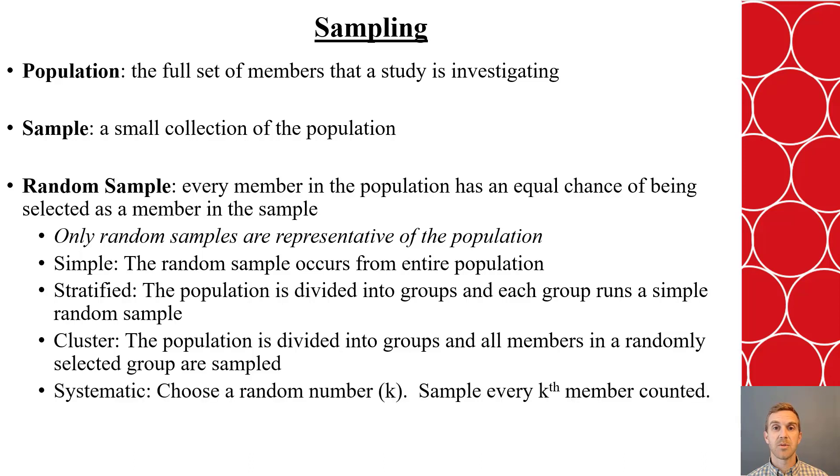And lastly, we have the systematic random sample. This is often used in things like doing searches for when you see police out for DUIs or when they're doing searches at the airport, where you take the Kth member in a line and do the sample. That helps to decrease bias and make sure that it is as random as possible.